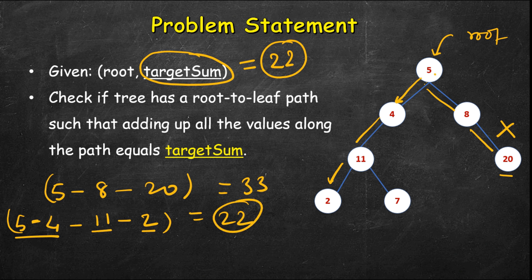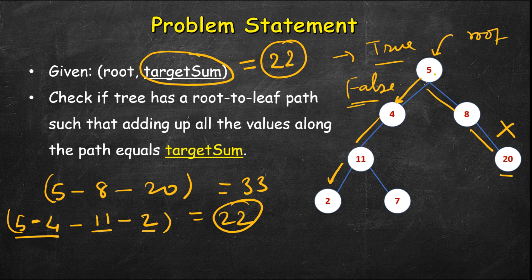The sum here is 5 plus 4 is 9, plus 11 is 20, plus 2 is 22 — so this is a valid path. Once you find a path whose sum equals the target, you return true. If you've checked all paths and never found the target sum, you return false.